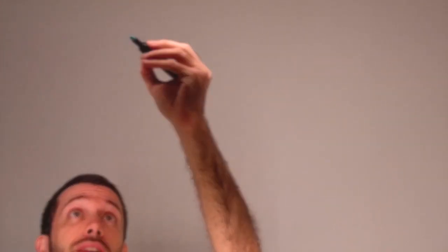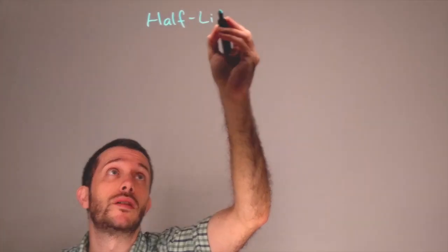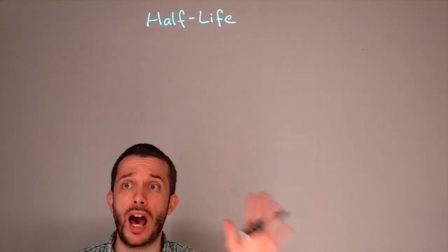Now, one single isotope, it is very random when this decay is going to happen. However, if you have many isotopes, there is a way how we can statistically specify it. And that way is called the half-life. So, what is a half-life?